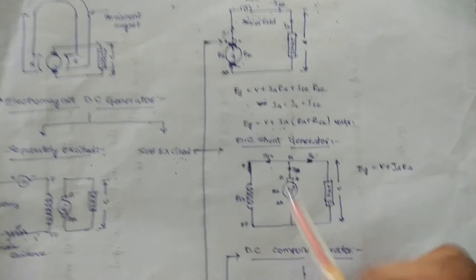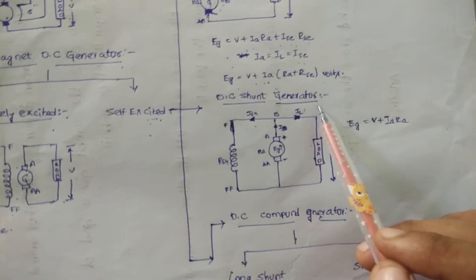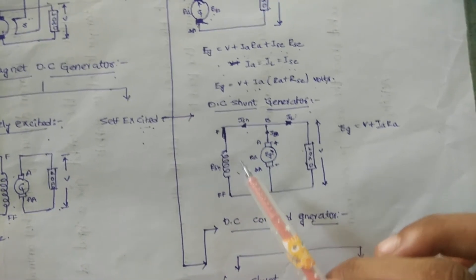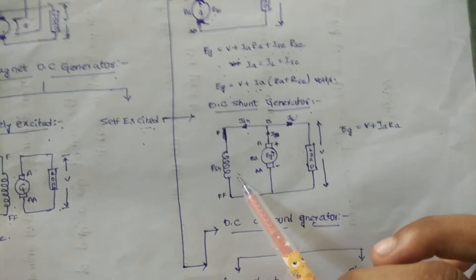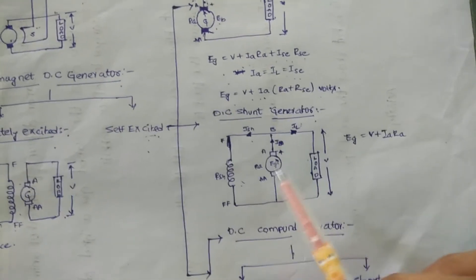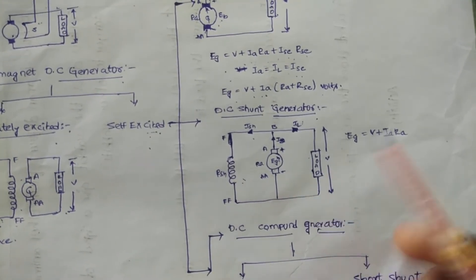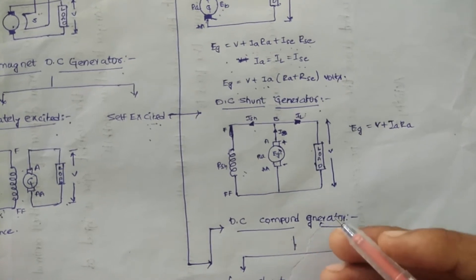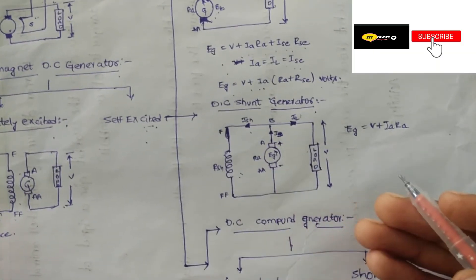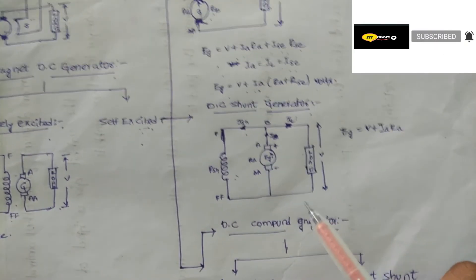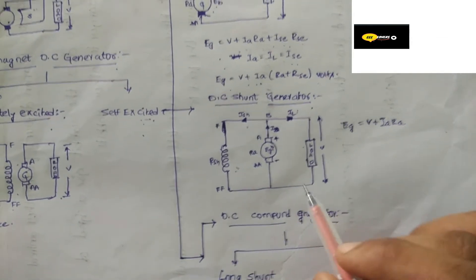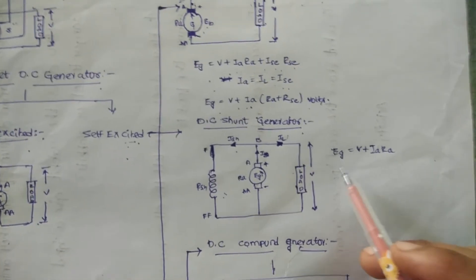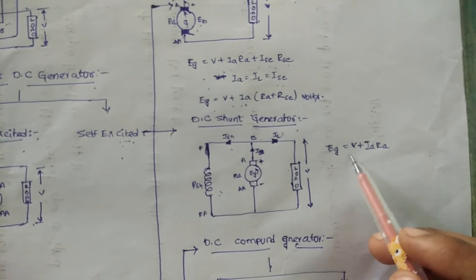In the DC shunt generator, the field winding is connected in parallel across the armature, as shown in the figure. The current flowing through the shunt field winding is about 5% of the rated armature current. Hence the shunt field winding is designed with many turns of wire, giving a high resistance of the order of 100 ohms. The voltage across the shunt field is the same as the terminal voltage. The EMF equation is: Eg = V + Ia·Ra.